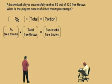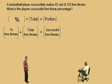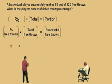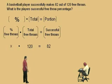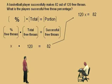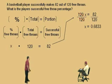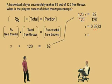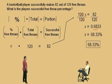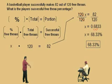Which one are we looking for — the percent, the total, or the portion? The percent — the percent free throws, because we want the free throw percentage. So that will be our x. Our total free throws is 120, and our successful free throws is 82. So there's our equation: x times 120 equals 82, which is 120x equals 82. Divide both sides by 120 — the 120s cancel. Take 82 divided by 120 and round to the nearest ten-thousandths (four decimal places). We get 0.6833. To change a decimal to a percent, move the decimal right twice. So our answer is 68.33% — that's the player's successful free throw percentage.